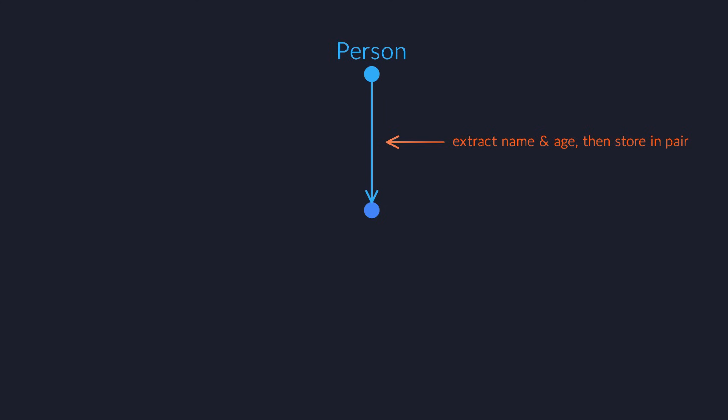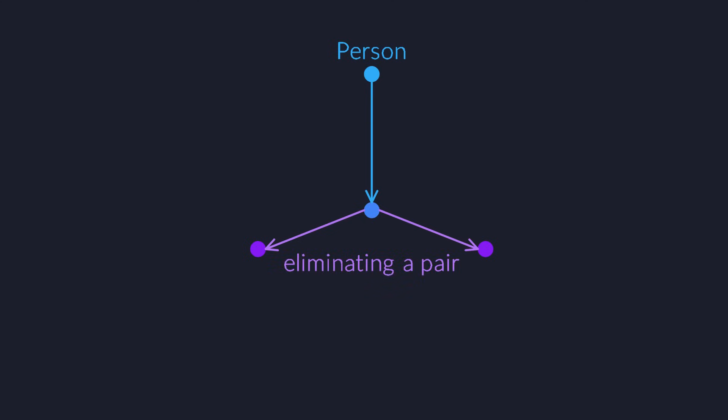And then we also need two functions to extract the first and second value from the pair. Let's say that the first function returns an integer and the second a piece of text — those are the age and the name that are stored in the pair. These two functions act like the elimination rules in logic: they turn a pair into something else.